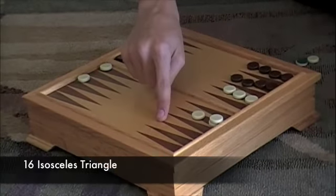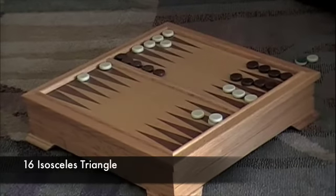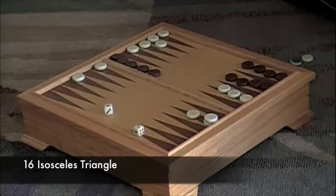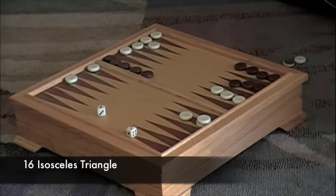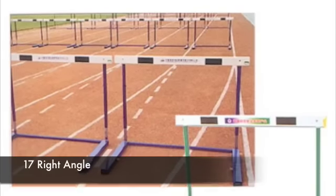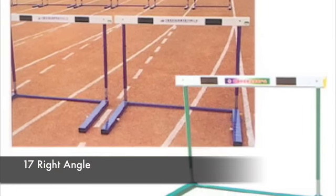Look at these triangles on the backgammon board. They're isosceles. Six! I win! These hurdles used in track are 90 degree angles.